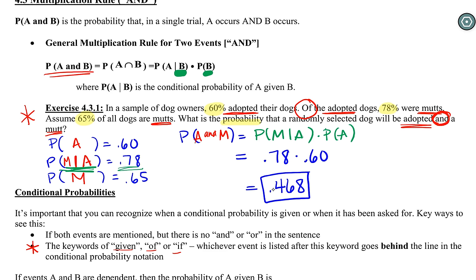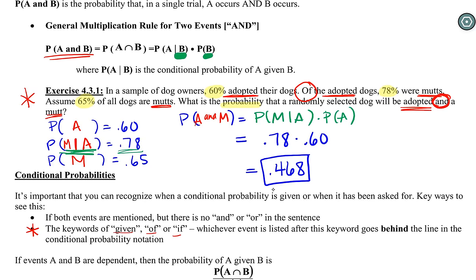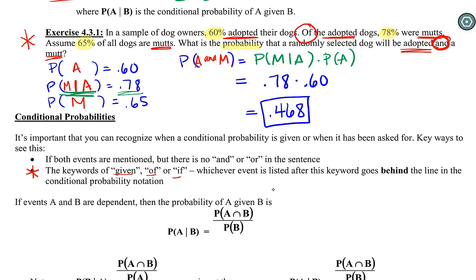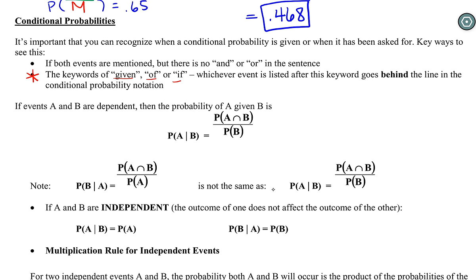So that's how we find our AND probabilities. For those dependent events where one influences the other — in this case a dog is probably more likely to be a mutt if adopted — we need to make sure we have this multiplication rule in effect. Those keywords of 'given,' 'of,' or 'if': underline your events, look for your keywords and circle them, so we're never translating these probabilities incorrectly. Whenever we have dependent events, this formula will be given to you on the test on the formula sheet, along with the AND and OR rules.